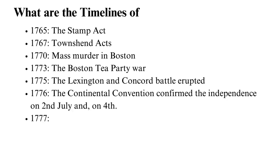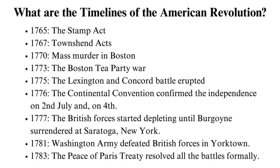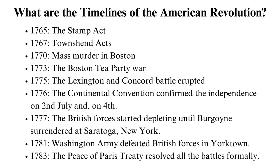What are the timelines of the American Revolution? 1765: the Stamp Act was passed and imposed internal taxes on official documents, newspapers, and documents printed in the colonies. This act made the colonies protest and have a representative meeting at the Stamp Act Congress.